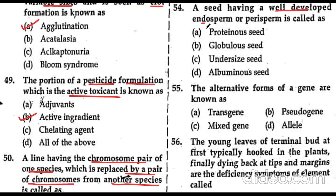Question 54: a seed having a well-developed endosperm or perisperm is called an albuminous seed. Endosperm is formed during double fertilization when a male nucleus fuses with the two central nuclei. Perisperm is the remnant of the nucellus present in some seeds. Seeds with well-developed endosperm and perisperm are albuminous seeds, mainly seen in monocots. Question 55: the alternative form of a gene is an allele.